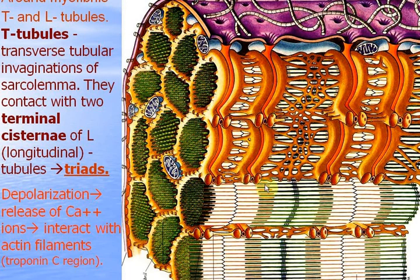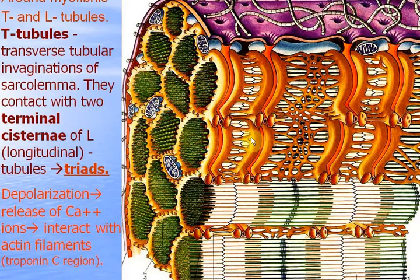These triads are located around the zone of overlapping, so between light and dark discs. When the nerve impulse comes into the sarcolemma, exciting it, depolarization goes along T-tubules to the cisterns. The calcium channels open and calcium ions are released and connect — bind — to the troponin complex calcium binding sites. The troponin complex moves the tropomyosin fibers and opens the myosin binding sites at actin. Myosin heads will connect with these myosin binding sites and push the actin filaments.